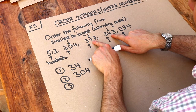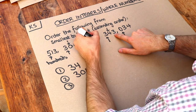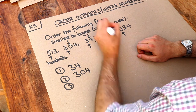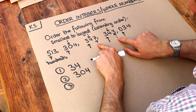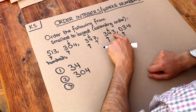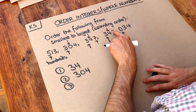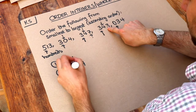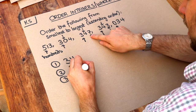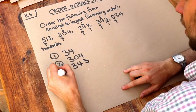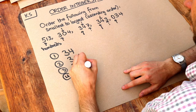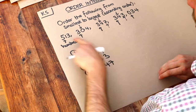Now it's between the two remaining numbers — they both have the same hundreds digit and the same tens digit, so it's still a draw. We look at the units digit: three or seven? Seven is bigger, three is smaller, so that number comes next.